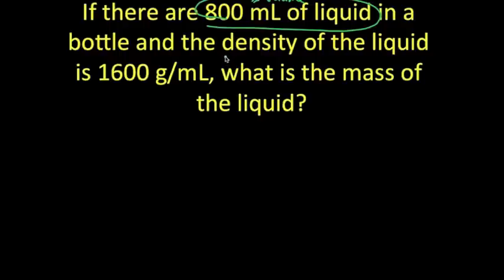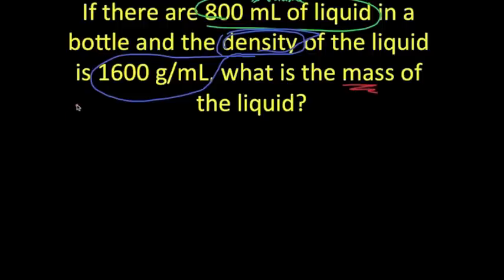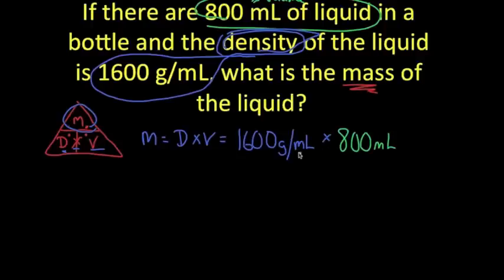Here we have another word problem: if there are 800 milliliters of a liquid in a bottle — that's our volume — and the density of that liquid is 1,600 grams per milliliter, what is the mass of the liquid? We set up our density triangle to solve for mass: mass equals density times volume. The density is 1,600 grams per milliliter and our volume is 800 milliliters. The milliliters cancel each other out, giving us a mass of 1,280,000 grams.